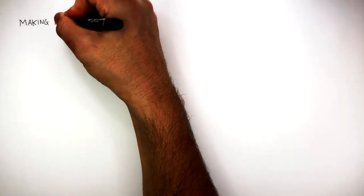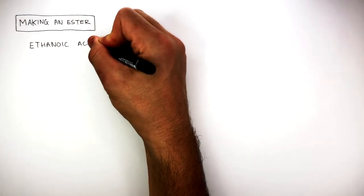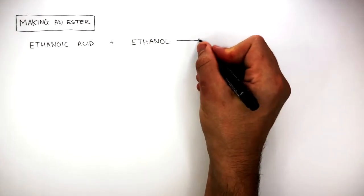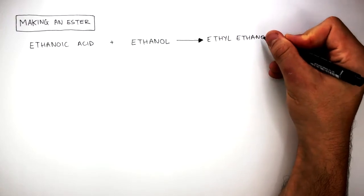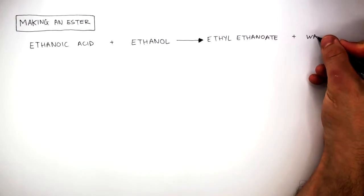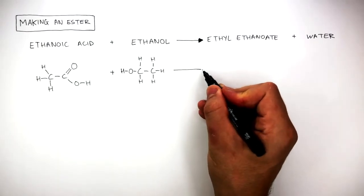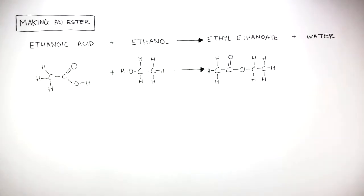An example of making an ester is when ethanoic acid reacts with ethanol to form ethyl ethanoate and water. These diagrams represent the displayed formulae of both ethanoic acid and ethanol, and we can see how they react to form ethyl ethanoate and water.